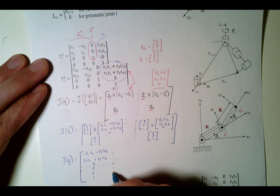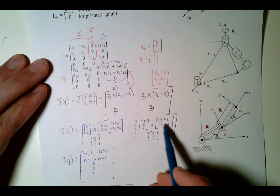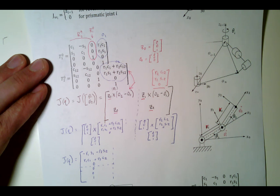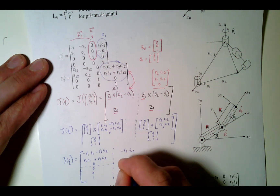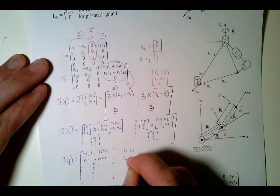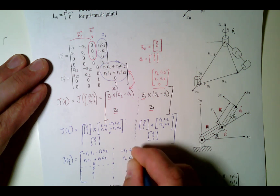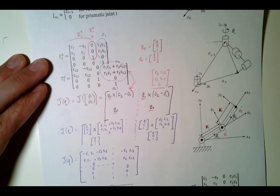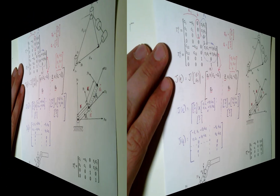The next column is easier because I don't have any of those extra terms. It's going to be minus R2*S12, R2*C12, 0, 0, 0, 1. And there we go — we finished it. Delightful.